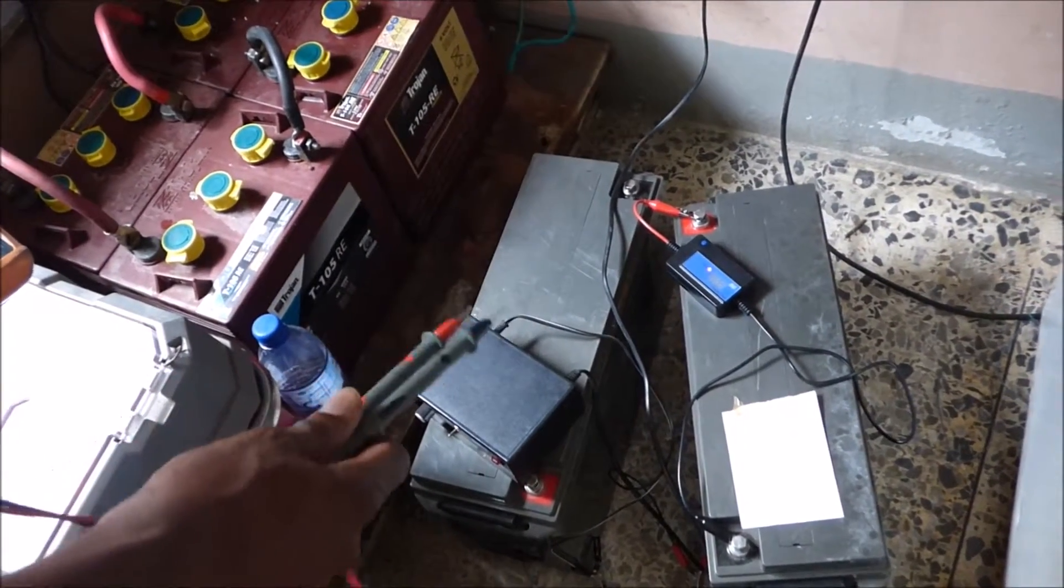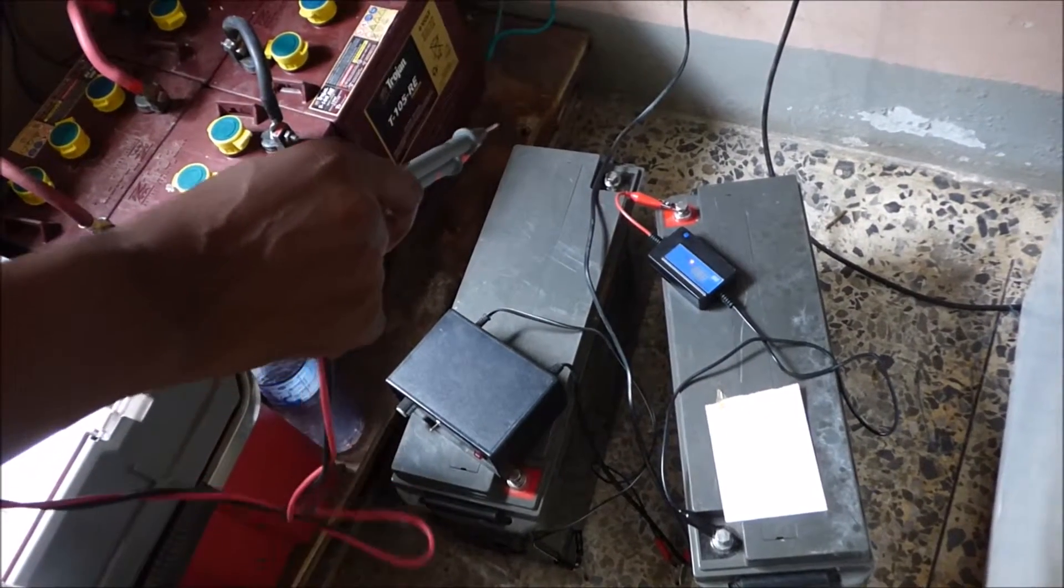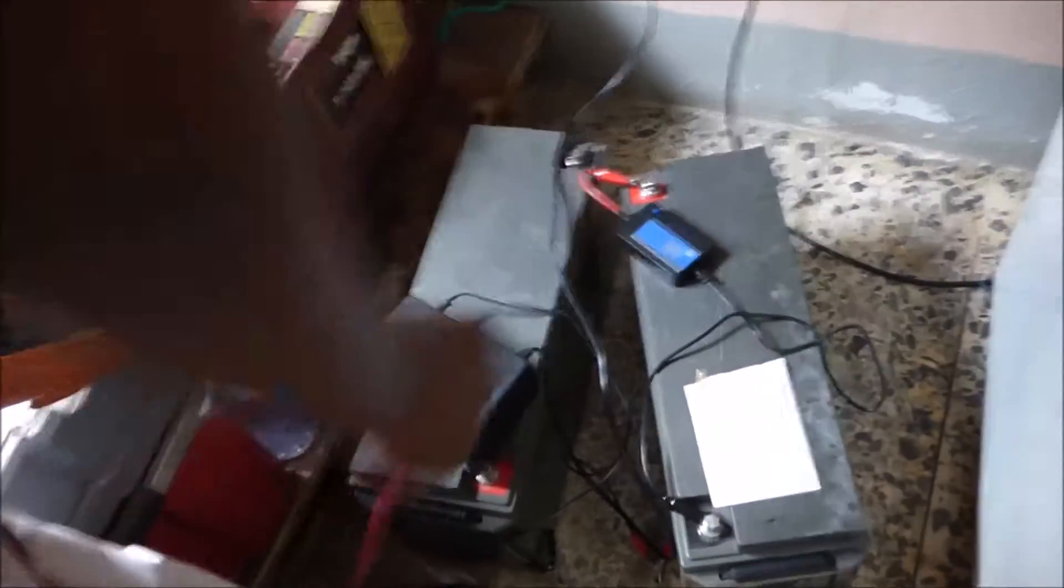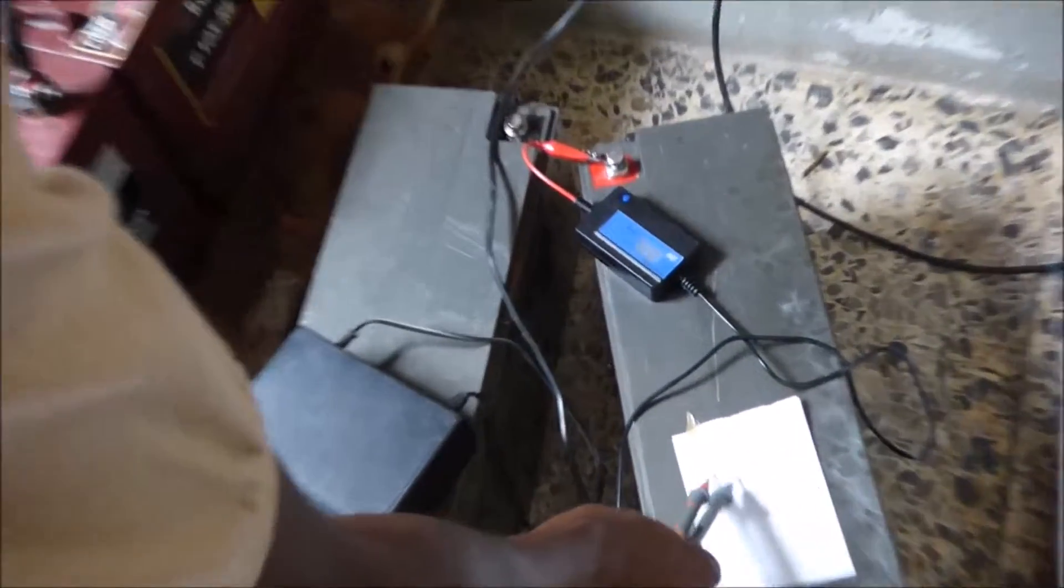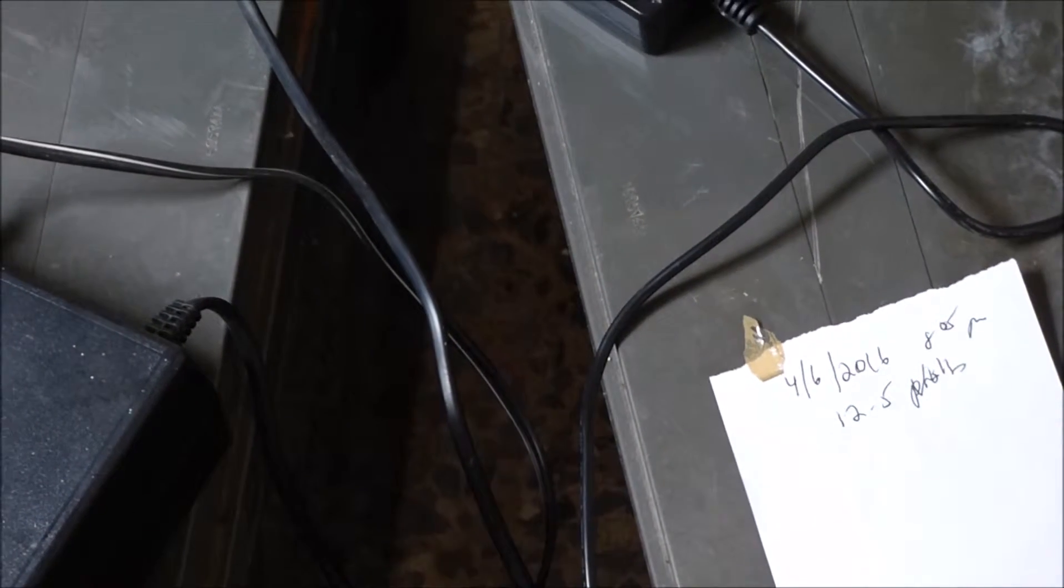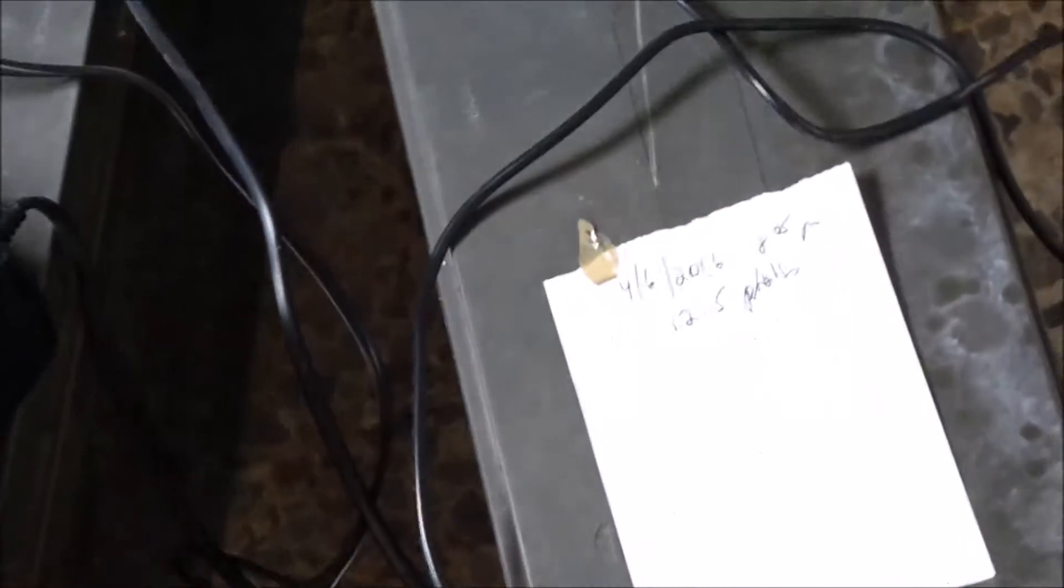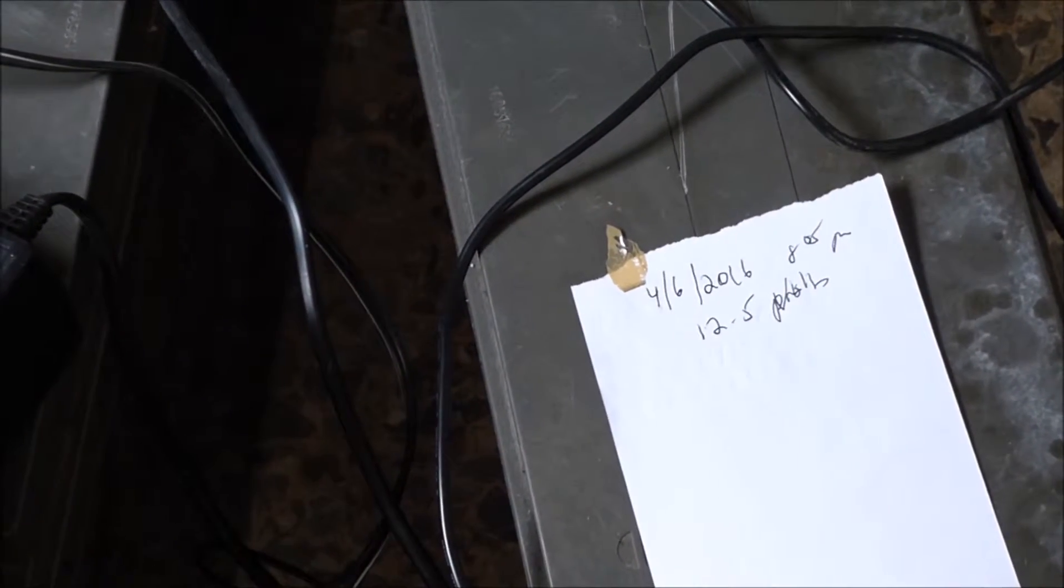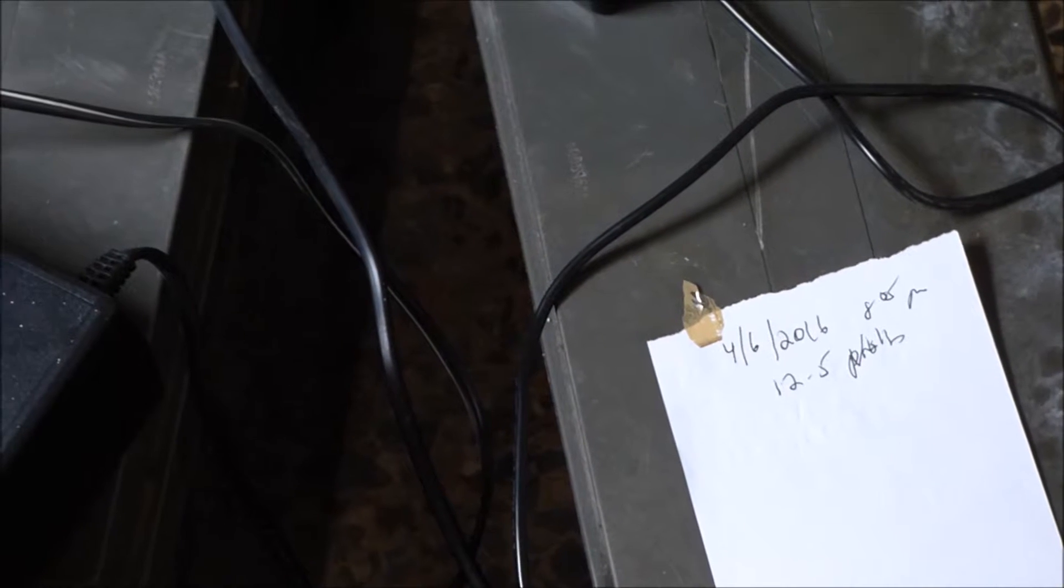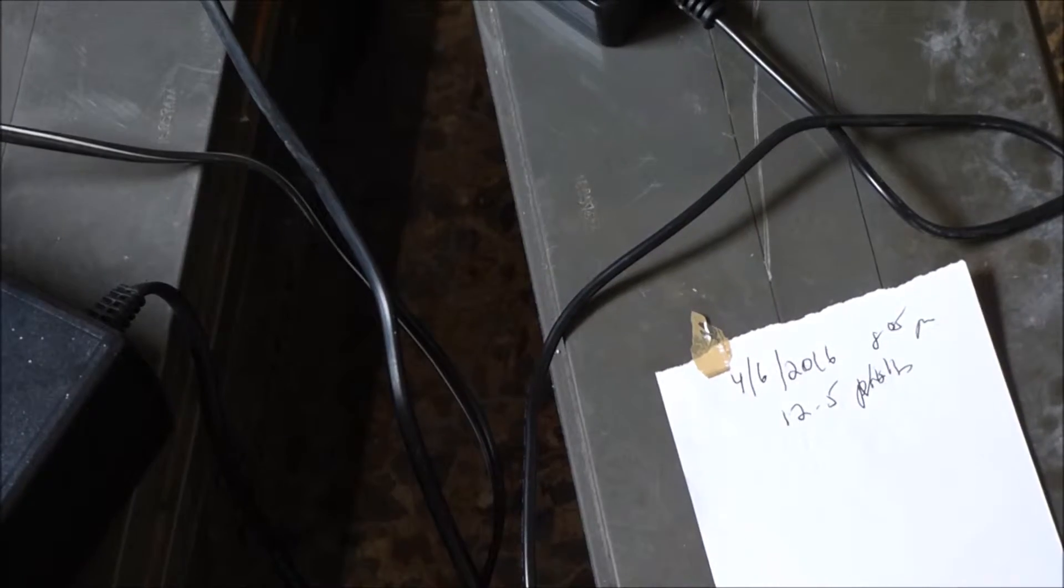When we started running this test, the battery was over 12 and a half volts. And that's what the desulfator said it was. This is our desulfator. It said it was at 12 and a half volts, and that was 8 o'clock p.m. yesterday. Now, when I tested with the multimeter, it showed that the battery was at 12.8, 12.9 volts. So what we're going to do is I'm going to show you what number the desulfator is actually telling us that the battery is. And now we're going to hook our multimeter to it, and you're going to see the magic that this device performs.